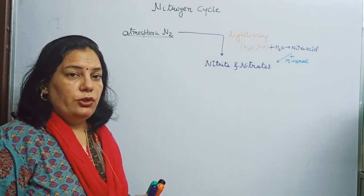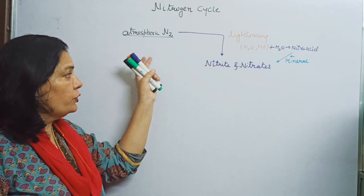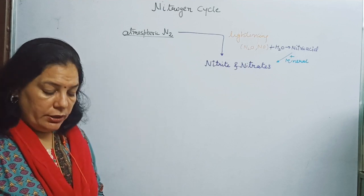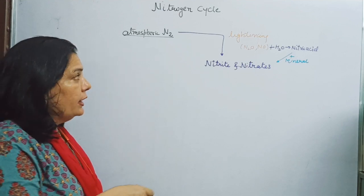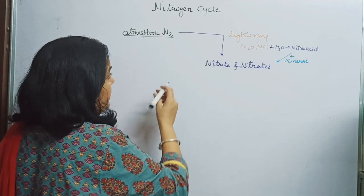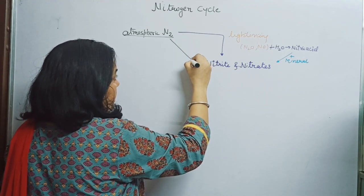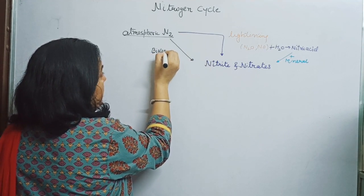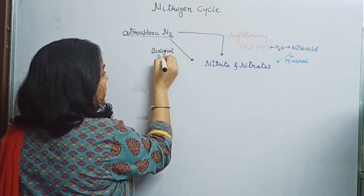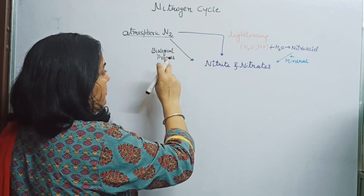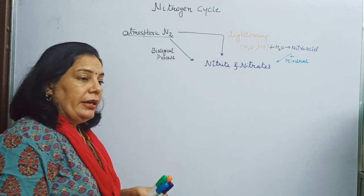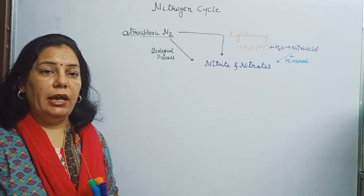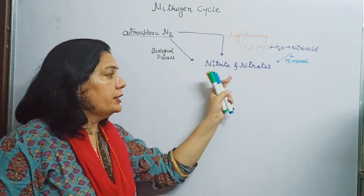So that is the first process — the natural process — by which nitrogen is converted into nitrites and nitrates. The second process is a biological process. In this biological process, some bacteria work to convert nitrogen present in the atmosphere into nitrites and nitrates.